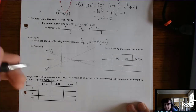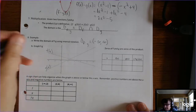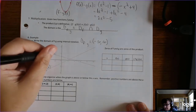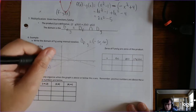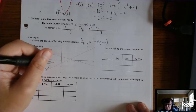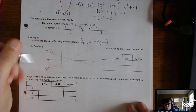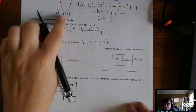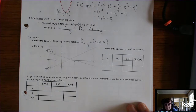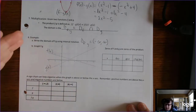Because we're multiplying, the degree is going to change. This is x to the first power, and a linear is x to the first power. When you multiply x times x, you know that's x squared. So when you start multiplying, the degree is going to change, and when the degree changes, the shape of the graph will change. It's a little more complicated when you multiply.